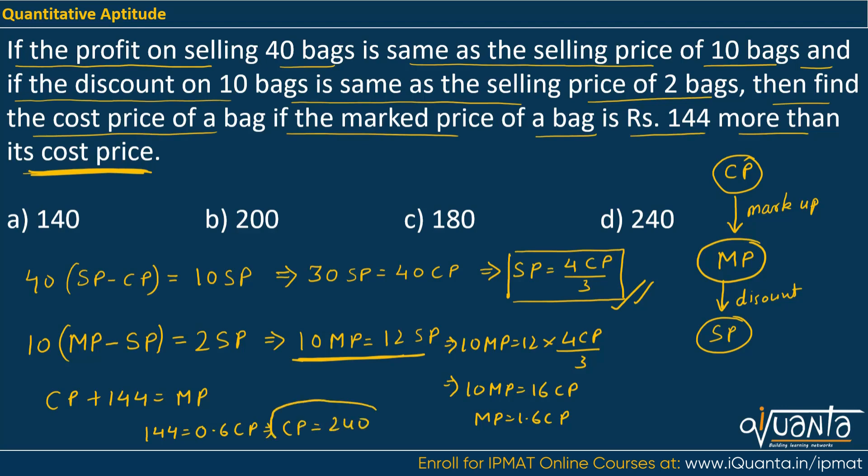So the cost price will be 240. Option D is the correct answer. This was not a very tough question — if your concepts about cost price, mark price, selling price, discount, and markup are all clear, you can easily solve this. If you still have a doubt, please comment. Thank you.